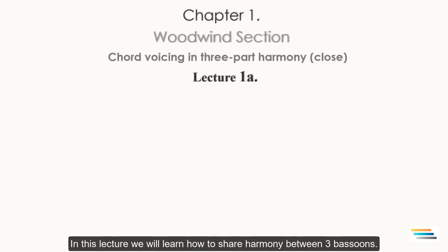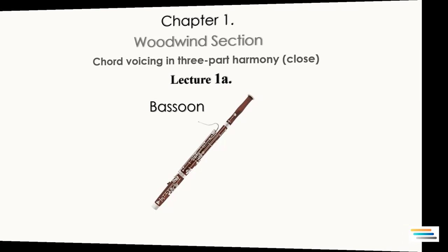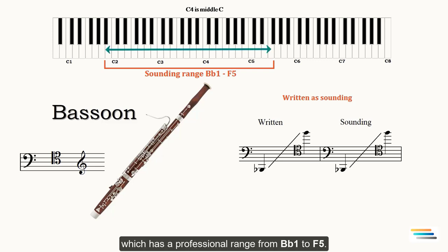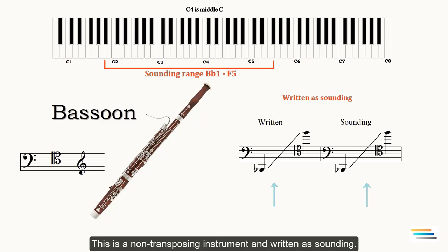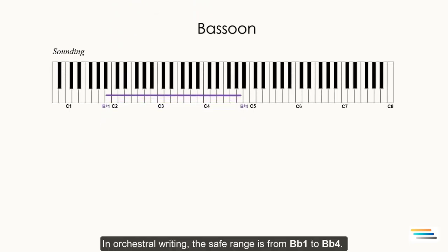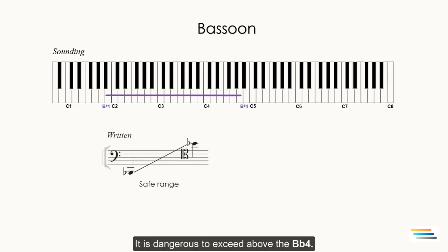In this lecture we will learn how to share harmony between three bassoons. The bassoon is a double reed instrument which has a professional range from B♭1 to F5. This is a non-transposing instrument and written as sounding. Three kinds of clefs - bass, tenor, treble - can be used. In orchestral writing the safe range is from B♭1 to B♭4. It is dangerous to exceed above the B♭4 because it is difficult to produce highest notes.